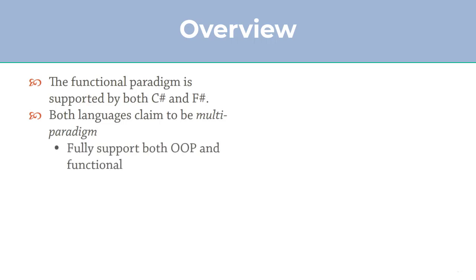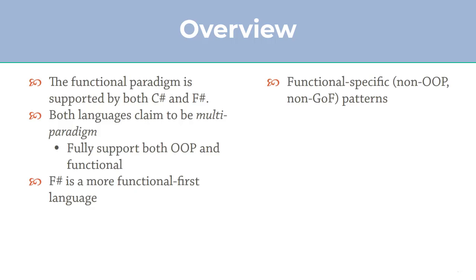F# is more of a functional programming language than C#. C# has plenty of the same features, but there is still more in F# that might be interesting if you're interested in programming on the .NET framework. You might ask yourself: if I want to use a particular pattern, is there any benefit to using F# over C#? The functional-specific design patterns are a separate world - they are not object-oriented and not the Gang of Four patterns. They are typically called monads.